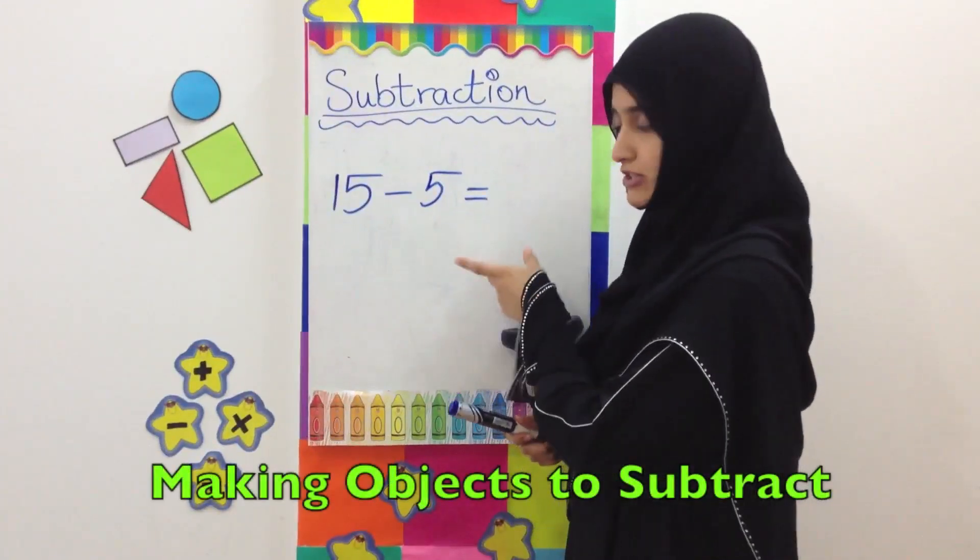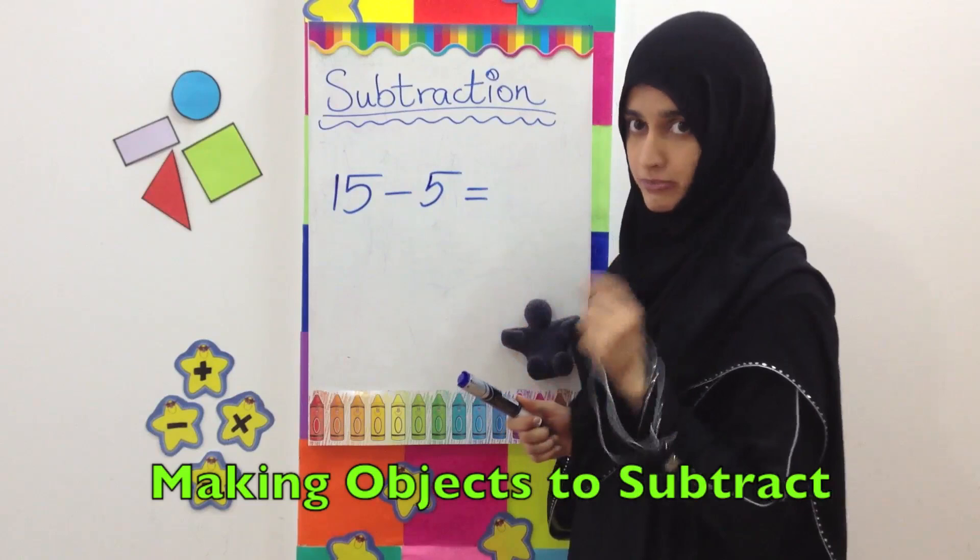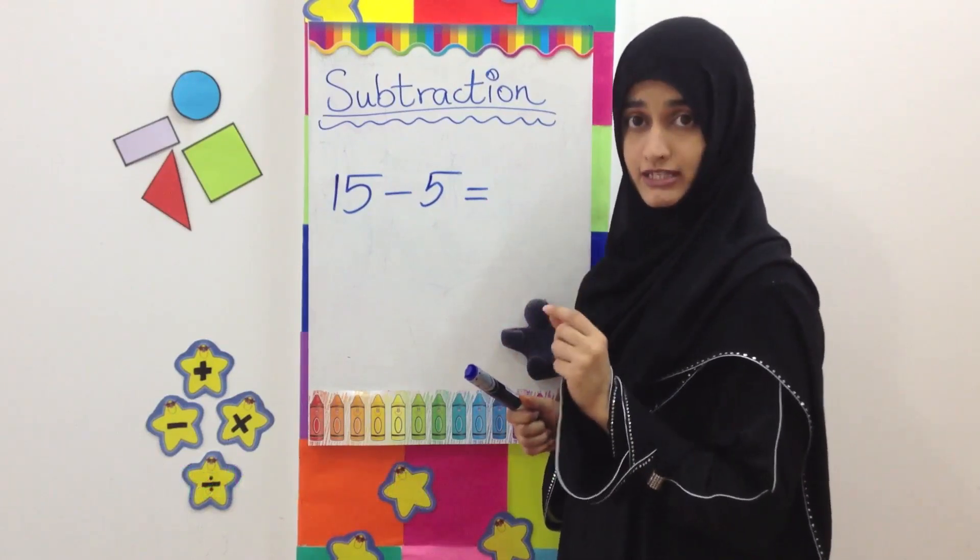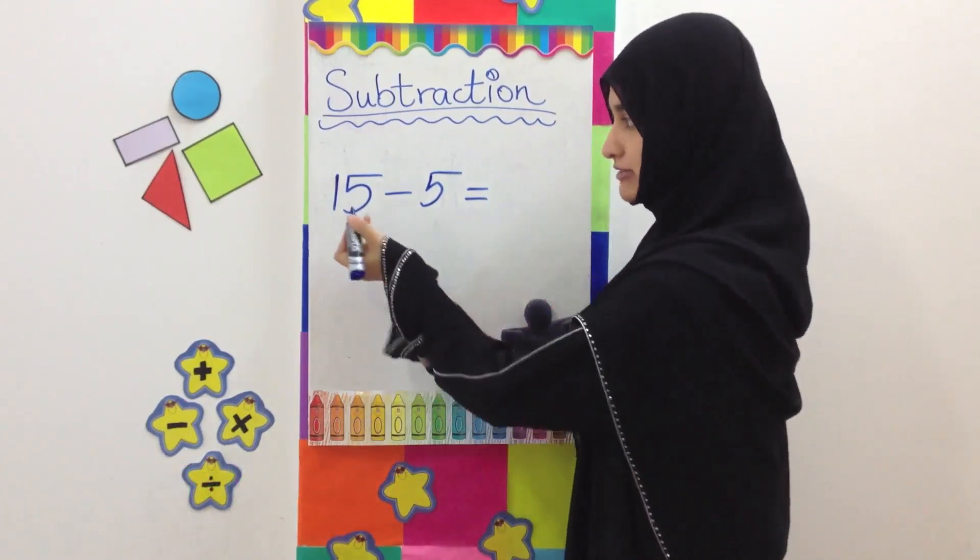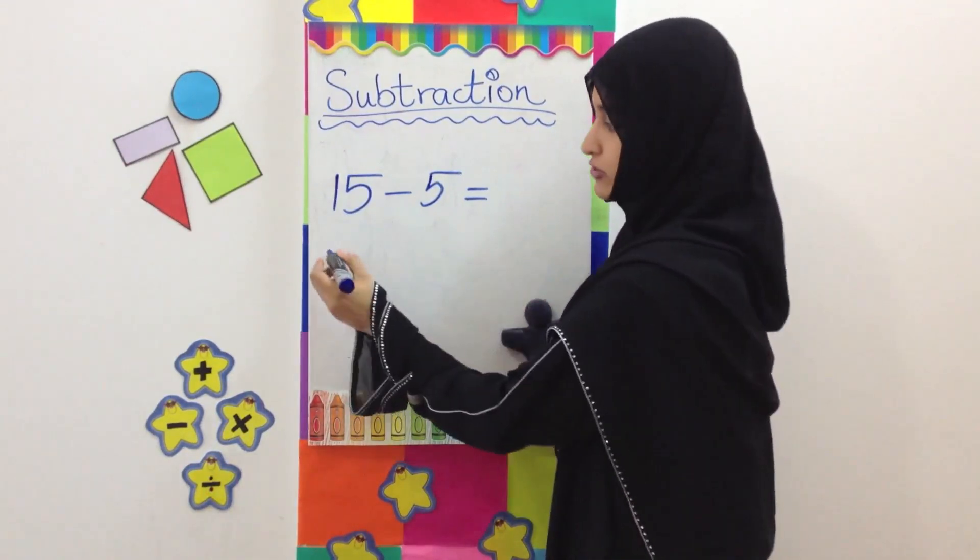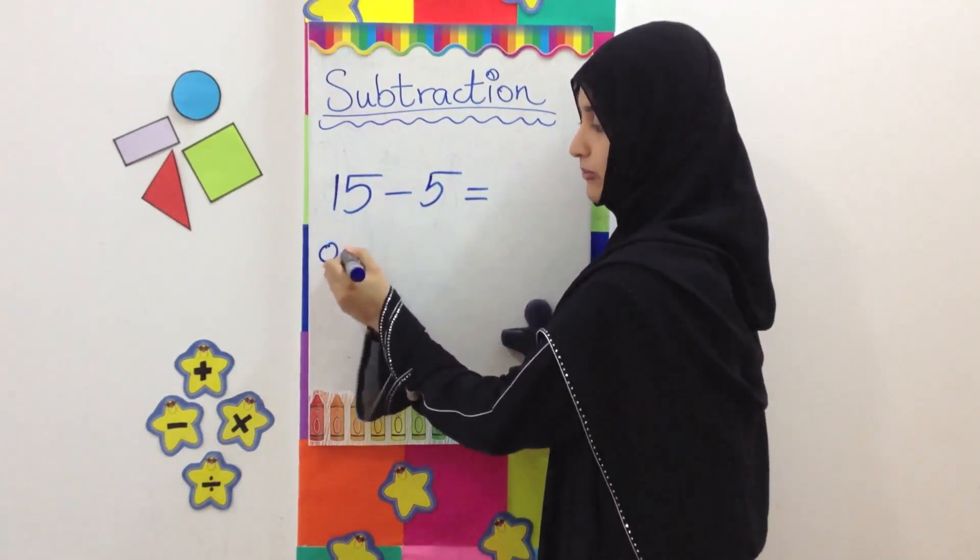Sometimes we have subtraction questions but we don't have any objects or pictures. So in that case we can draw our objects ourselves. The question is 15 minus 5. We have to draw 15 objects first. I am going to draw balls.